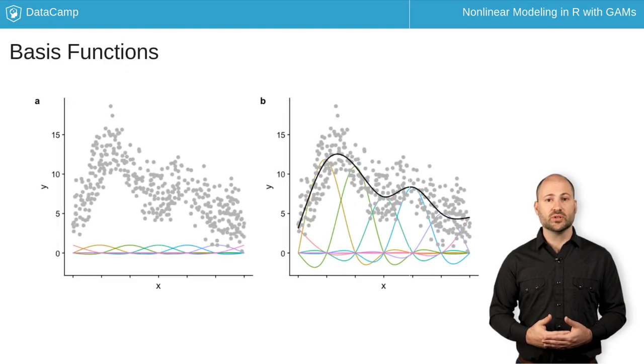The flexible smooths and GAMs are actually constructed of many smaller functions. These are called basis functions. Each smooth is the sum of a number of basis functions, and each basis function is multiplied by a coefficient, each of which is a parameter in the model.